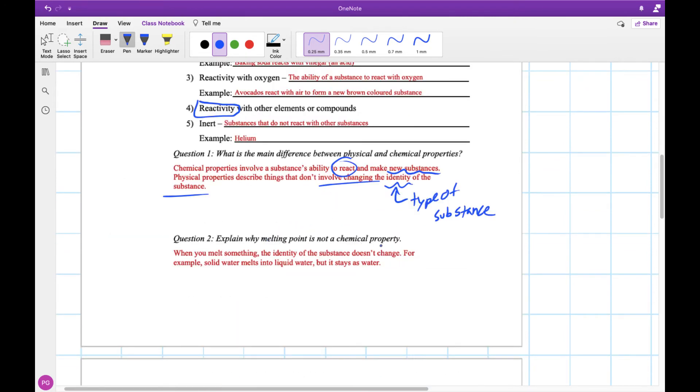Why is melting point not a chemical property? When you melt something, the identity of the substance doesn't change. For instance, when you melt ice into water, it's still water. Even though all it is is frozen water to liquid water, it stays as water the whole time. So it's not changing the identity. We're not changing what substance we have. The substance stays water the whole time.